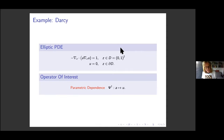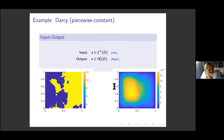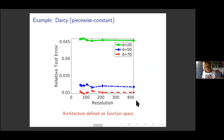Returning to the Darcy problem — now written as an elliptic PDE after eliminating velocity — we are learning the mapping from the coefficient A, which is a function, to the solution U, also a function. This could be combined with learning dependence on the initial condition in time-dependent problems. The typical inputs are piecewise-constant permeability fields, with the pressure output on the right. This was the example where we achieved resolution-invariant approximation of the true operator mapping permeability to pressure.